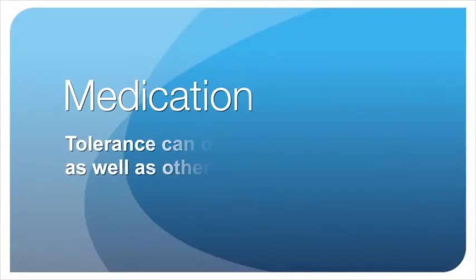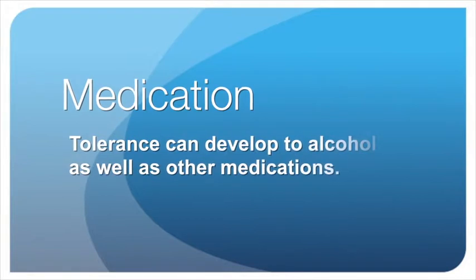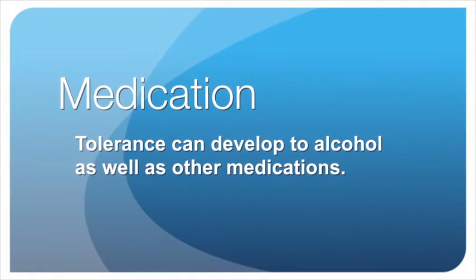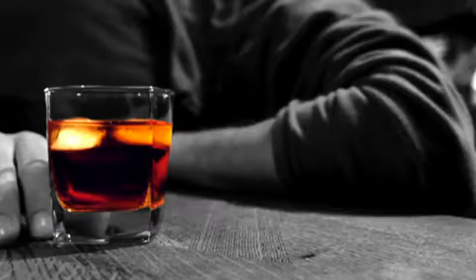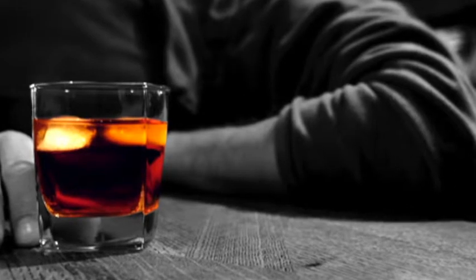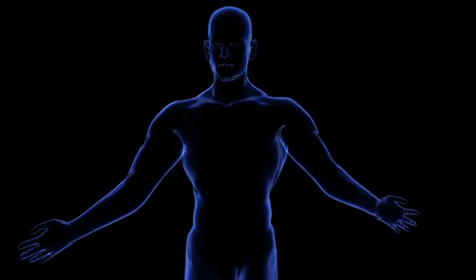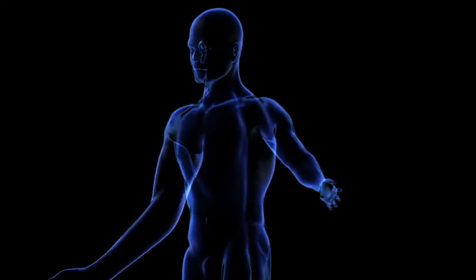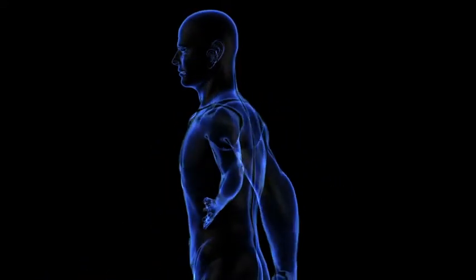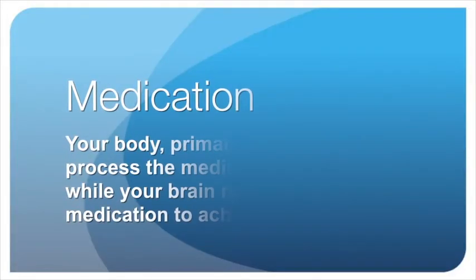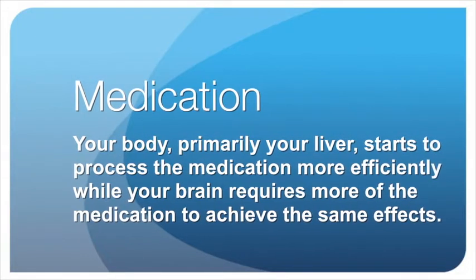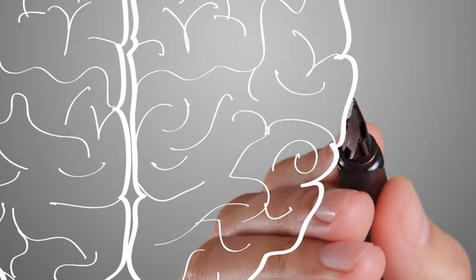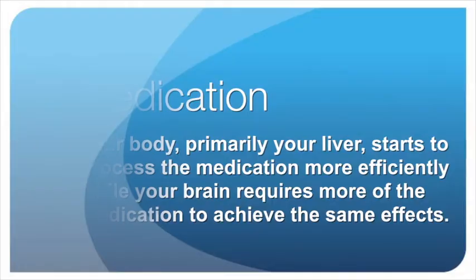Why does this happen? It still confuses scientists as to exactly why tolerance occurs, however it is something that we see in common with pretty much all of the pain medications. Tolerance can happen to other drugs as well, like alcohol. Part of the reason tolerance develops is because your body gets more efficient at metabolizing the medications, and the organs that the medication is affecting start to become resistant to the medication effects. So the nervous cells and the brain start to shut off their responsiveness to the drugs.